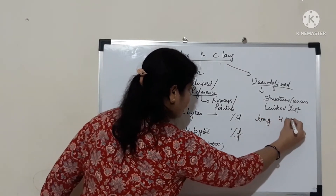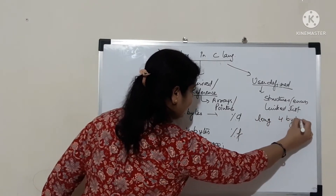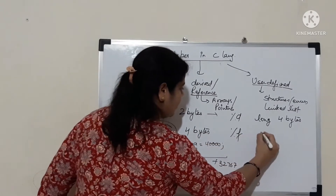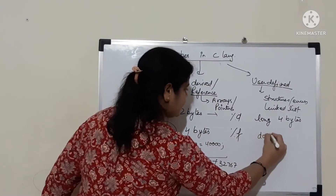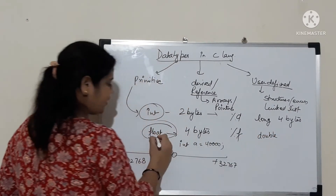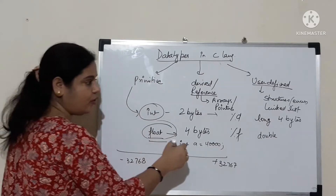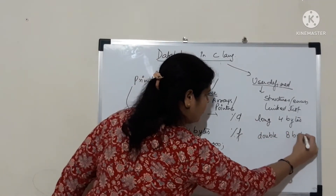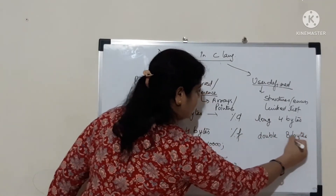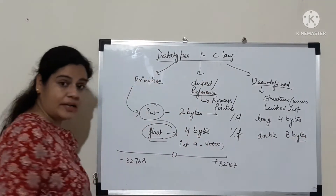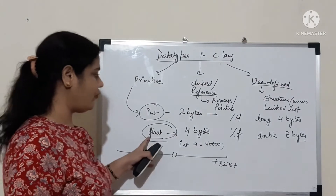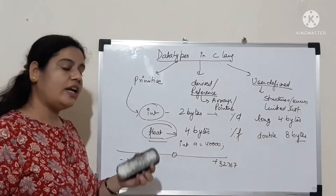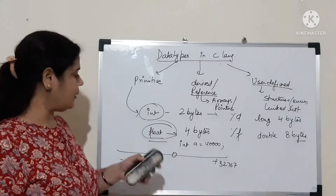Long integer takes 4 bytes in memory. And for float, to exceed the range of a float variable, you need to use double. So double is for float, and long is for integer.